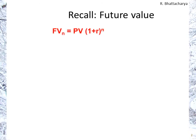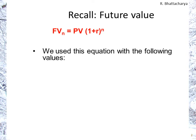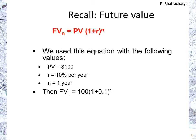For future value, we have the equation — you may notice I've changed the t to an n. The future value at a given point in time is equal to the present value times one plus the rate, to the power of n, where n is the number of periods. Using a present value of $100, a rate of 10% per year, and a period of one year, that gives us a future value of 100 times 1.1, or $110.